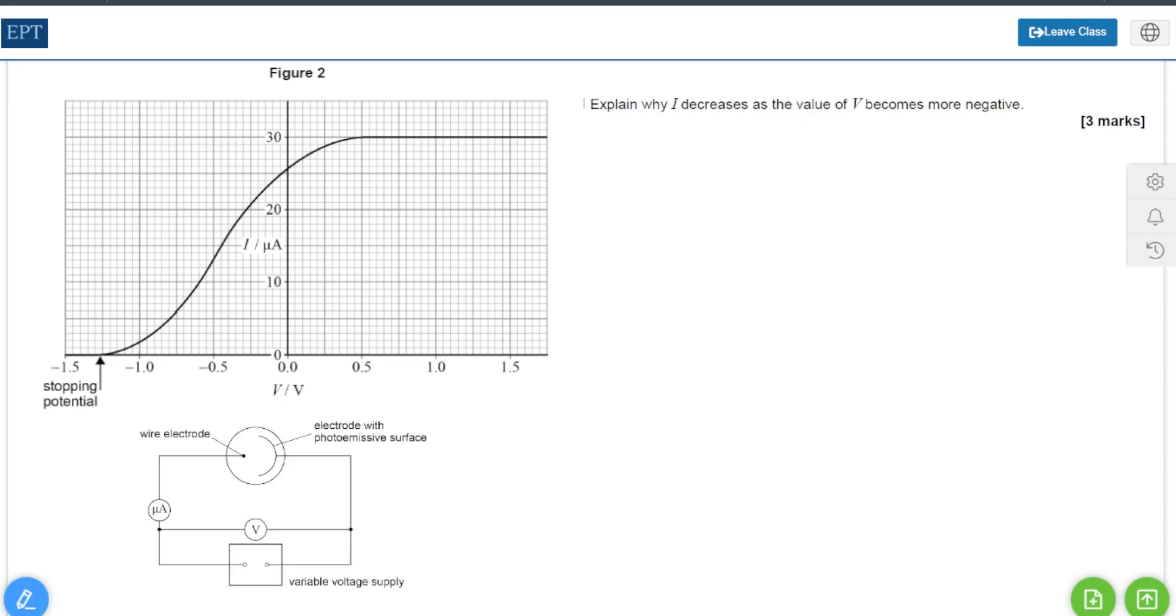Lastly we have to explain why if the wire electrode on the left is made negative, as we increase the value of that negative, the current reduces eventually down to zero.